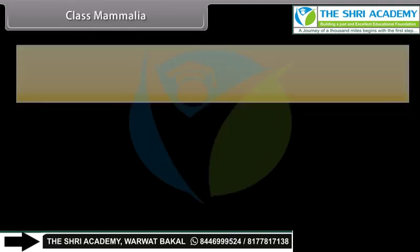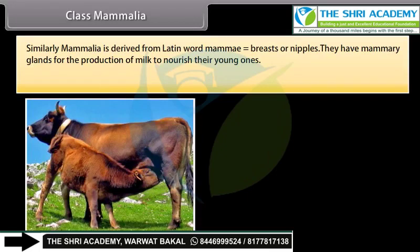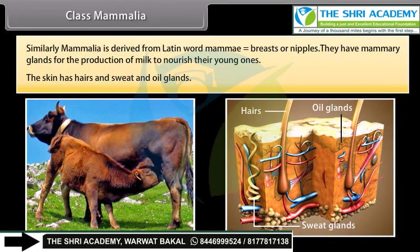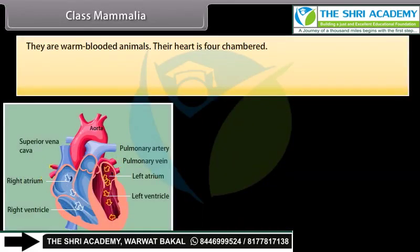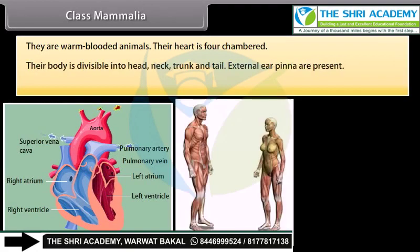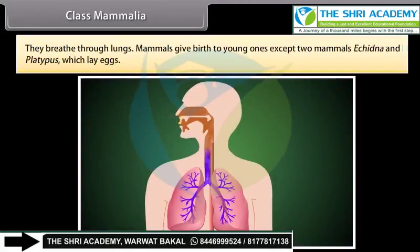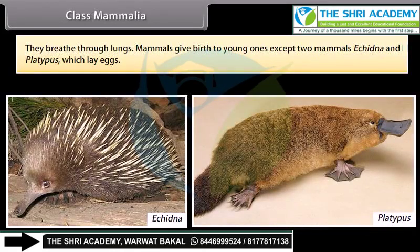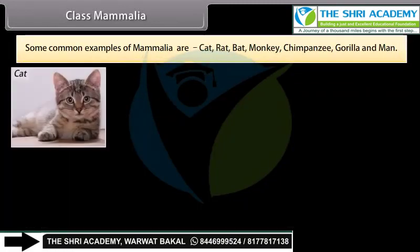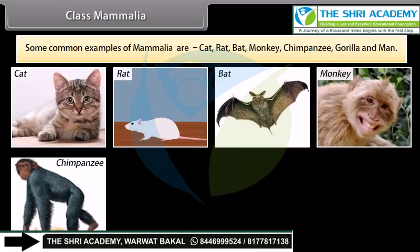Class Mammalia. Mammalia is derived from the Latin word mamma, meaning breasts or nipples. They have mammary glands for the production of milk to nourish their young ones. Their skin has hairs and sweat and oil glands. They are warm-blooded animals. Their heart is four-chambered. Their body is divisible into head, neck, trunk, and tail. External ears (pinna) are present. They have four limbs. The diaphragm divides the body into two cavities internally. They breathe through lungs. Mammals give birth to young ones, except two mammals — Echidna and Platypus — which lay eggs. Common examples are cat, rat, bat, monkey, chimpanzee, gorilla, and man.